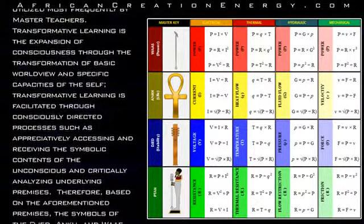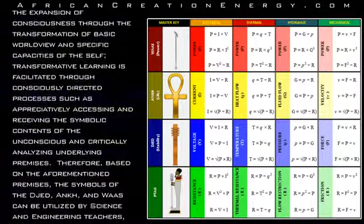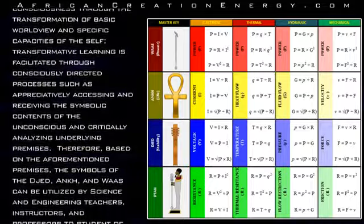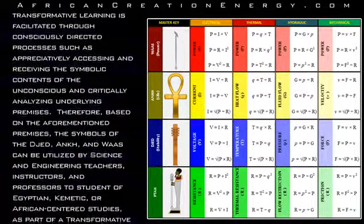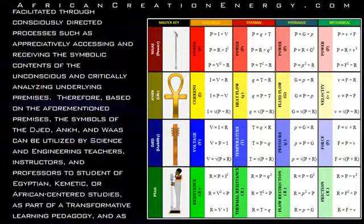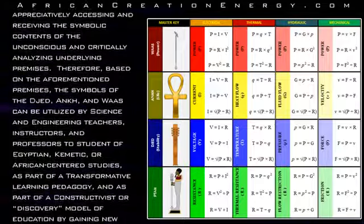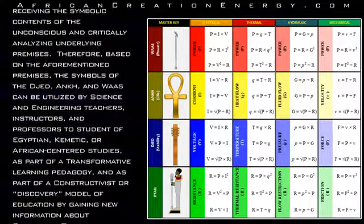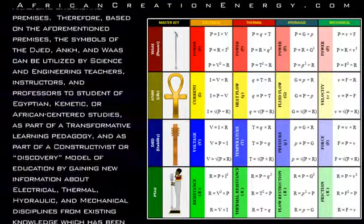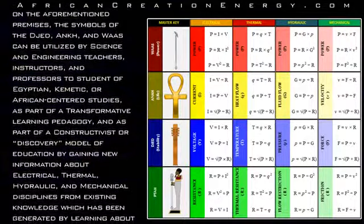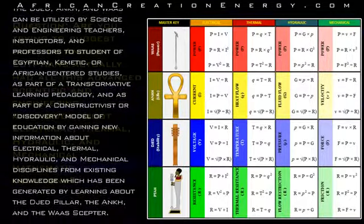Therefore, based on the aforementioned premises, the symbols of the Jed, Ankh, and Wa-S can be utilized by science and engineering teachers, instructors, and professors with students of Egyptian, Kemetic, or African-centered studies as part of a transformative learning pedagogy and as part of a constructivist or discovery model of education — by gaining new information about electrical, thermal, hydraulic, and mechanical disciplines from existing knowledge generated by learning about the Jed Pillar, the Ankh, and the Wa-S scepter.